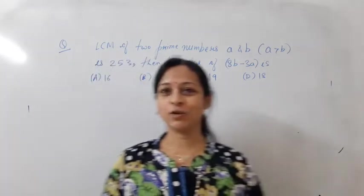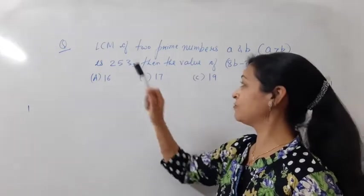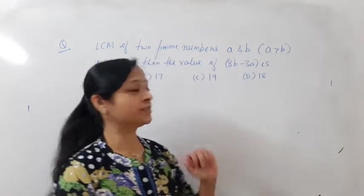Hello everyone, in this question it is given that the LCM of two prime numbers A and B is 253, then you have to find the value of 8B minus 3A.